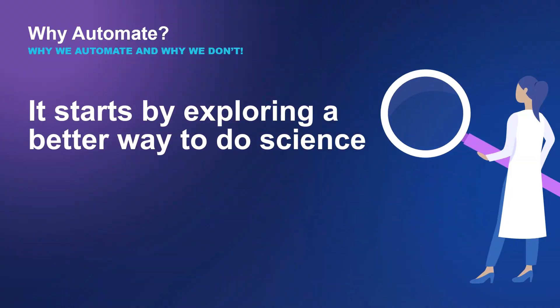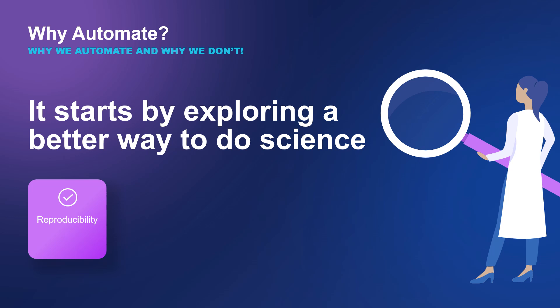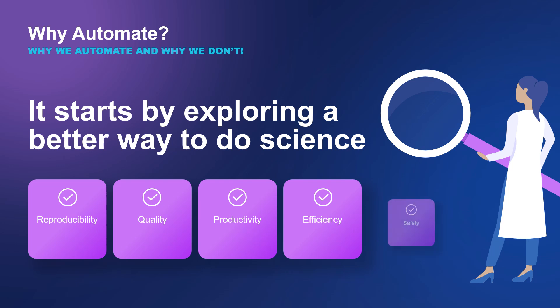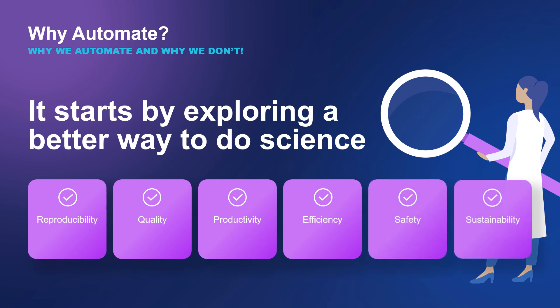So why do we automate? It starts by exploring a better way to go about our operations within the lab. It's about enhancing reproducibility — it boosts quality and productivity, it ramps up efficiency, and it makes our lab safer. It can also support the sustainability initiatives that many of us have. The aim is to blend both physical and digital automation together to integrate and run our operations much more efficiently and effectively.